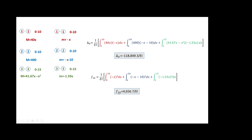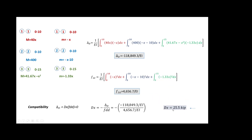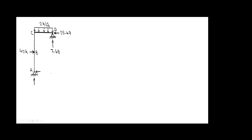Remember, this is the horizontal displacement caused by a unit load. Now apply the compatibility equation: at that point there should be zero displacement, so the displacement from the real load plus the reaction times the coefficient of flexibility equals zero. These terms cancel, and you can solve for the reaction in x. Once you have the reaction in x and place it over there, the rest is plain statics — summation of moments, forces in x and y to find the remaining reactions.